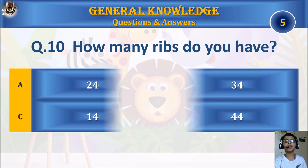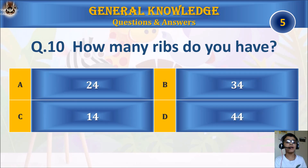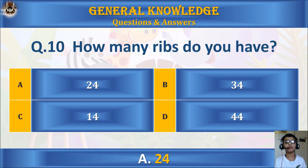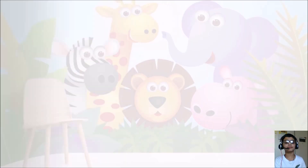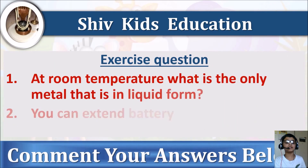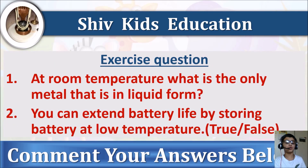Question 10: How many ribs do you have? A: 24, B: 34, C: 40, or D: 44. Your time starts. The answer is A: 24. Here are the exercise questions. Question 1: At room temperature, what is the only metal that is in liquid form? Question 2: You can extend battery life by storing battery at low temperature — true or false? Please find a comment to answer below.